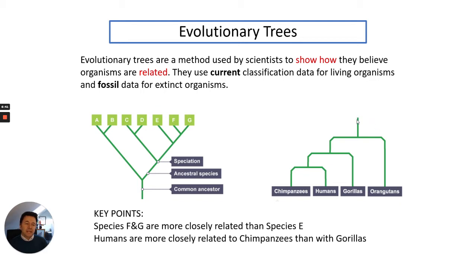Another form of classification is going downwards rather than upwards. The key points here are: in this first classification tree, species f and g are more closely related than to e. The reason being is that they are closer on the evolutionary tree. Also, humans in this second example are more closely related to chimpanzees than with gorillas. You can see that they're closely related on the evolutionary tree. We are related to gorillas but more distantly.